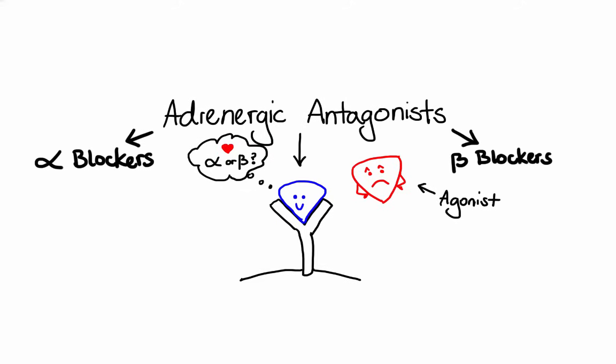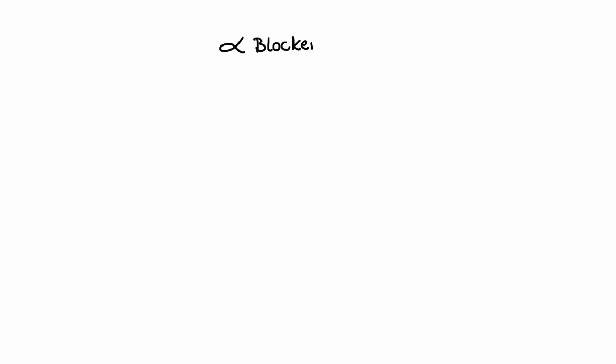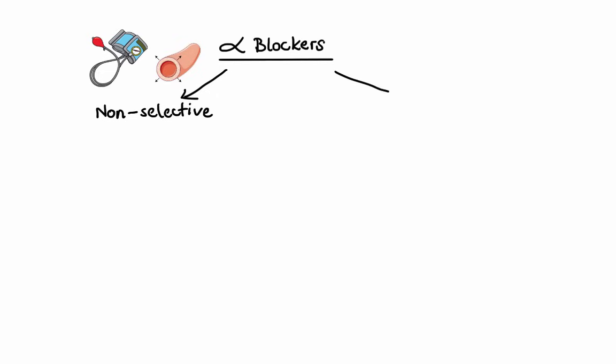Let's start with alpha blockers first. Alpha-1 adrenergic antagonists block the binding of norepinephrine to smooth muscle receptors, which results in vasodilation and thus lowering of blood pressure. This is why alpha blockers are useful in the treatment of hypertension. Alpha blockers can be subdivided into non-selective alpha blockers and selective alpha blockers.